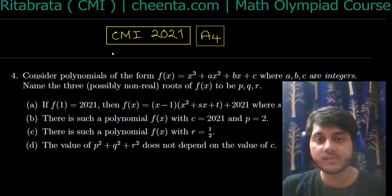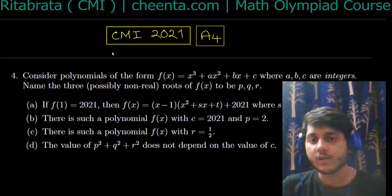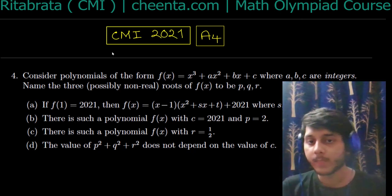The roots are p, q, r with no constraints. We have to determine: if f(1) = 2021, then we can write f(x) in the form f(x) = (x - 1)(x² + sx + t) + 2021, where s, t are integers. We have to determine whether there are such polynomials.